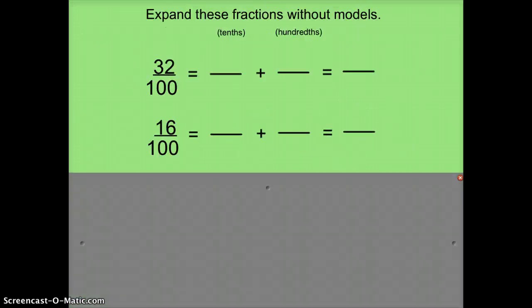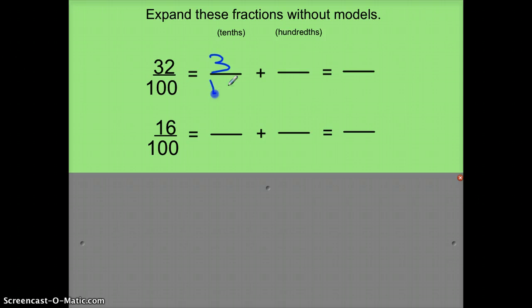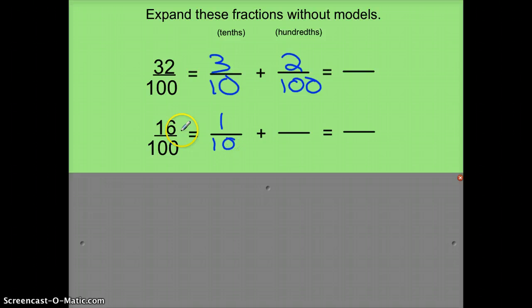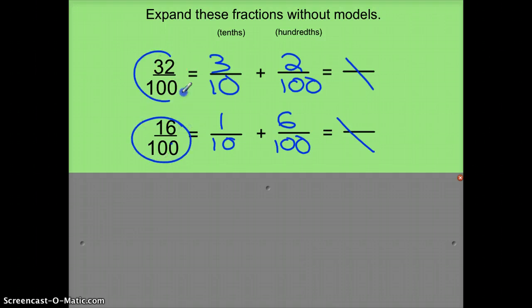I'm going to do a couple of these without a picture. Looking at 32 100ths — thinking of 10ths first, instead of 30 100ths, I'm going to say that's 3 10ths. And the 2 100ths will remain the same. For 16 100ths, instead of saying it's 10 100ths, I'll say it's 1 10th plus 6 100ths.